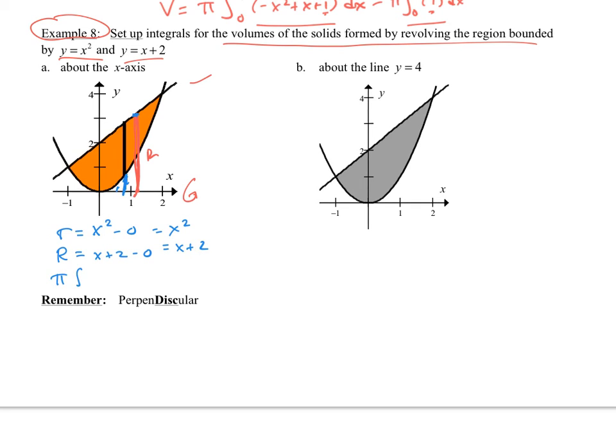So it's going to be pi negative one to two. I should have found my points of intersection, but it looks like that's what those are. And then we have our pi r squared. Big r, x plus two, quantity squared dx.